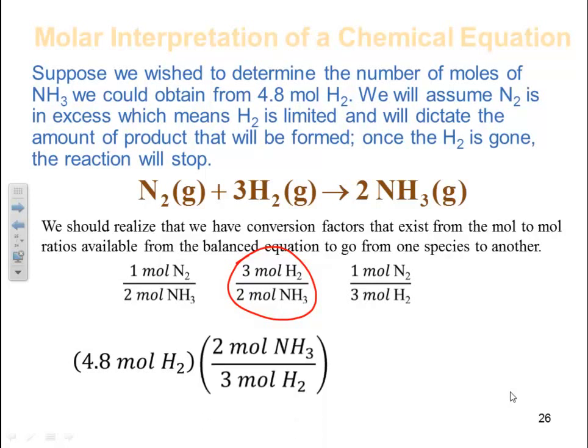so it's going to be the reciprocal of that particular conversion factor. So I'll plug that in. That gives me two moles of ammonia to three moles of hydrogen. My moles cancel. Multiply it out. That means I can produce 3.2 moles of ammonia with 4.8 moles of hydrogen.